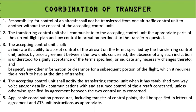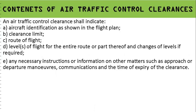The accepting control unit shall notify the transferring control unit when it has established two-way voice communication or data link communication with the released aircraft and has assumed control. If there is a letter of agreement, this particular notification may not be required. All applicable coordination procedures, including the transfer of control point, should be specified in the letter of agreement and made available to the concerned air traffic service units for day-to-day operations.